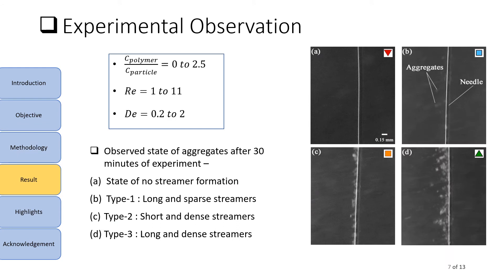Experiments have been performed for a total of 25 data points with concentration ratio ranging from 0 to 2.5 and RPM of the rod ranging from 100 RPM to 800 RPM, which corresponds to Reynolds number ranging from 1 to 11 and Deborah number ranging from 0.2 to 2. Each data point is a 30-minute-long experiment. This time scale was enough to ensure that no further significant change in morphology of streamer was observed.